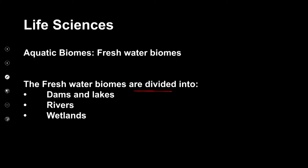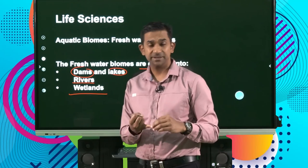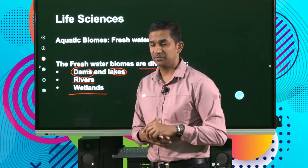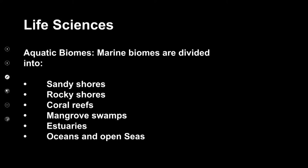Freshwater biomes are divided into three types: dams and lakes, rivers, and wetlands. These are water bodies that are not salty — water we can consume. Marine biomes are divided into sandy shores, rocky shores, coral reefs, mangrove swamps, estuaries, and oceans and open seas. We need to look at the typical microorganisms or aquatic organisms that live there and how that is influenced by the terrain.